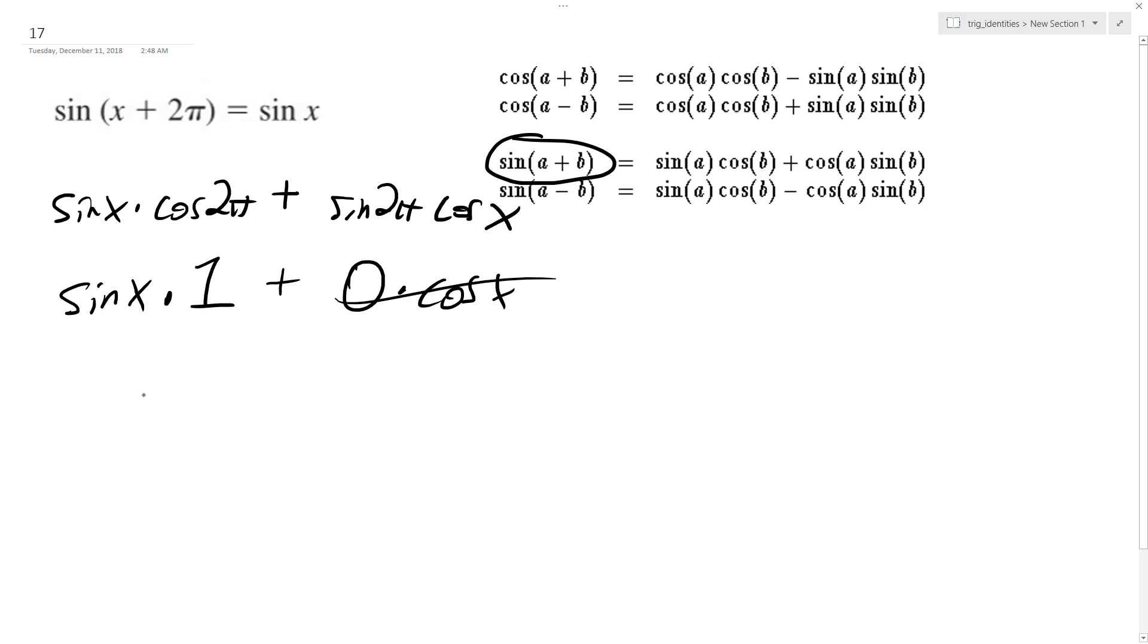Well this whole thing is 0, and we just have 1 times sine x, so we get sine of x. And that matches up and verifies this identity.